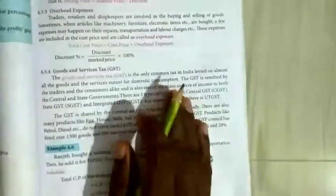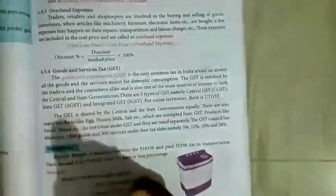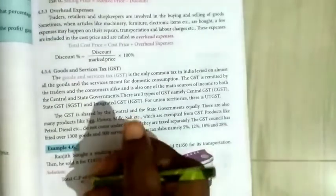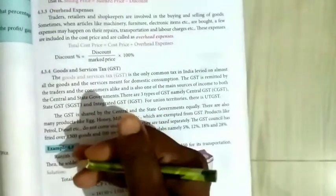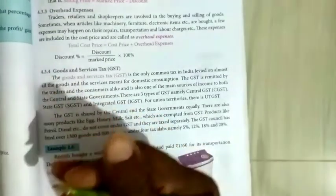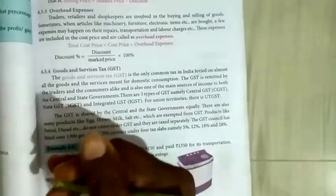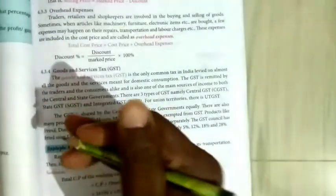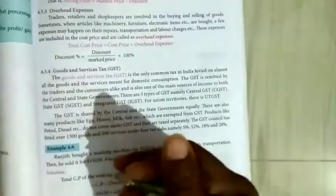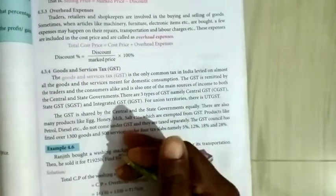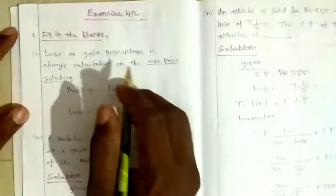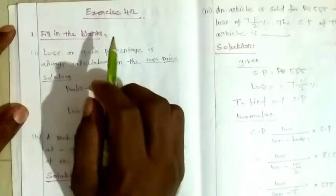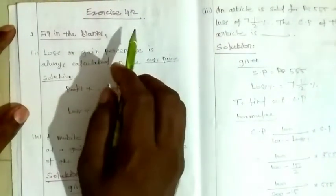There are three types of GST: Central GST, State GST, and Integrated GST. For Union territories, there is UT GST. Now let us solve problems from exercise 4.2.